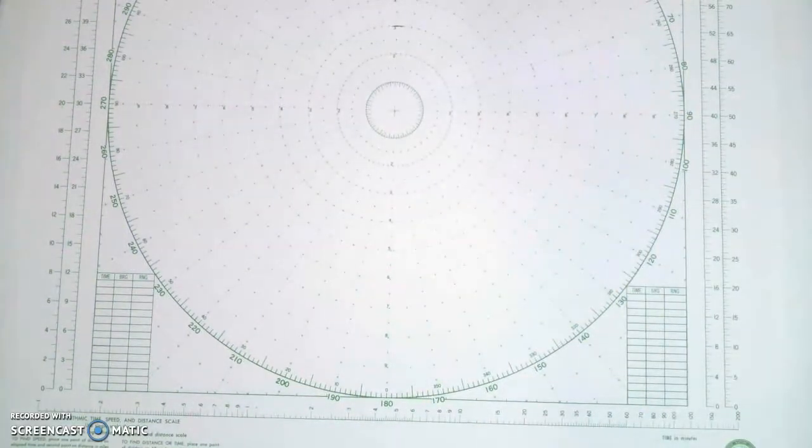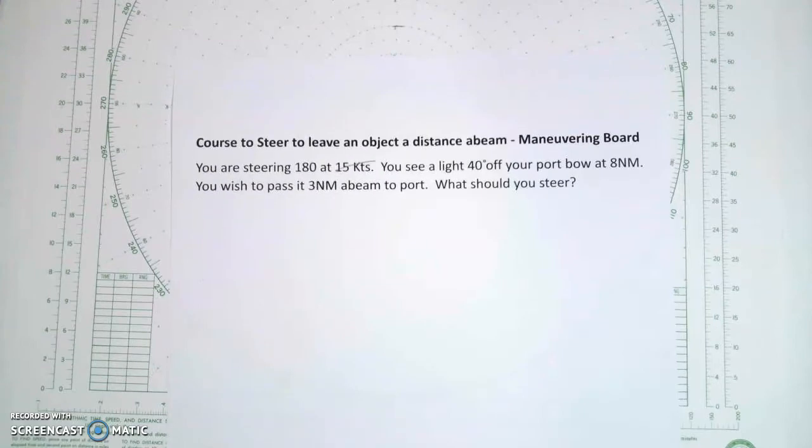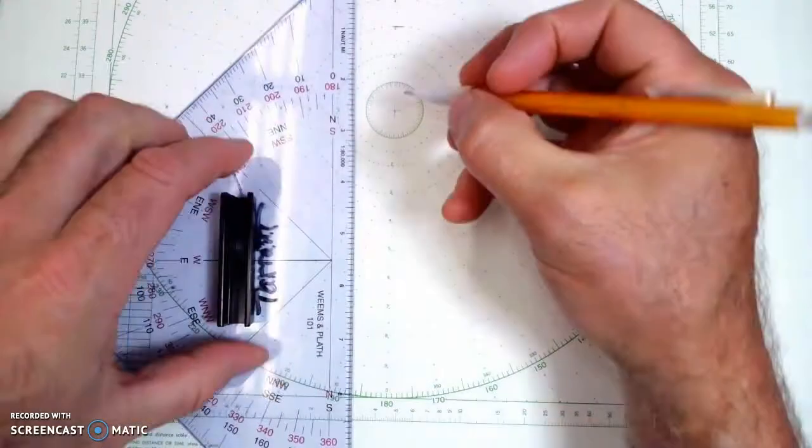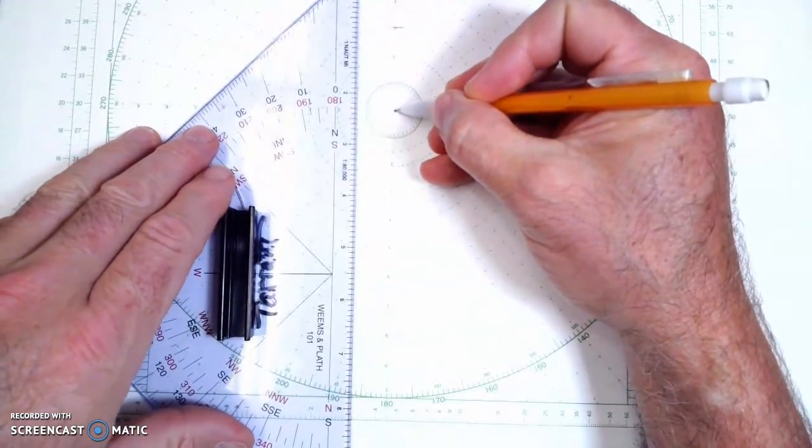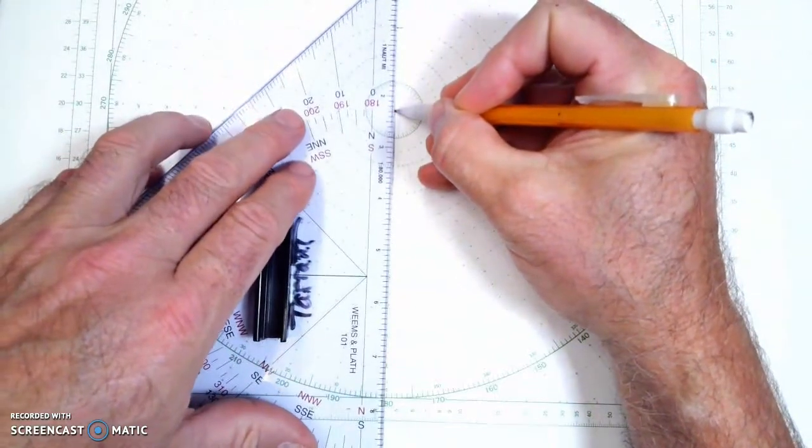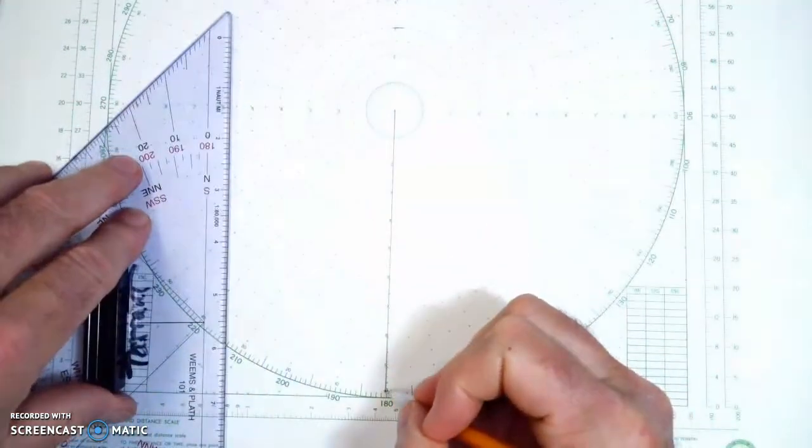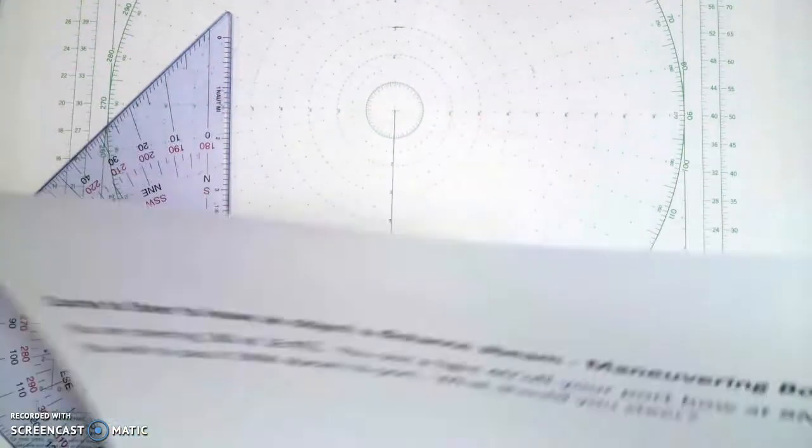First thing first, we're going to be going 180. So I'm going to indicate 180 here. That's our course, 180. I'm just going to go ahead and draw the whole thing.